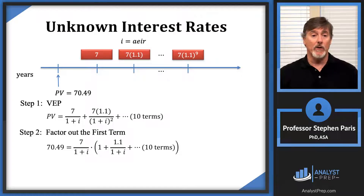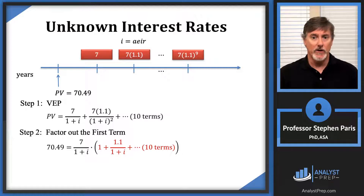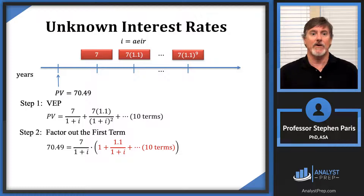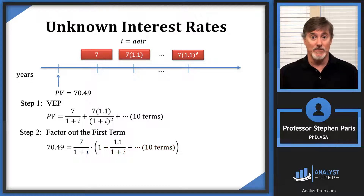Normally at this point I look at the expression in parentheses and determine whether it's an a-double-dot or an S by examining the 1/(1+i) term, but I don't have a numeric value for that. I also can't determine whether the quantity in parentheses is bigger or less than 10, because the coefficient 7/(1+i) is not numeric either. So I'm stuck.